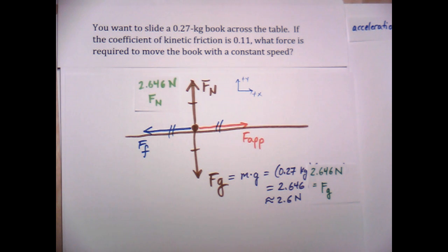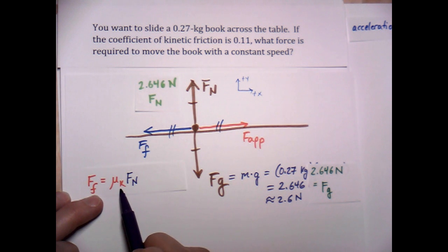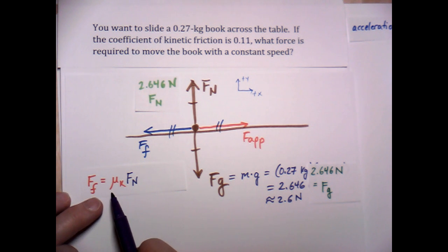And that equation is frictional force is equal to the normal force times this coefficient, which is called mu, or mu, it depends however you want to pronounce it. And then this k here is the, this little subscript k stands for kinetic friction. So mu sub k stands for the coefficient of kinetic friction. And we've been told in the problem that this is equal to 0.11.